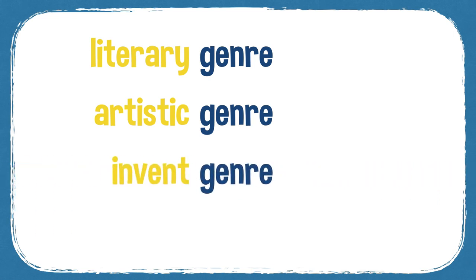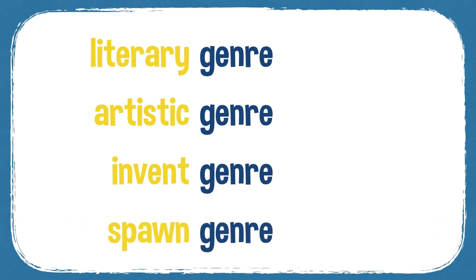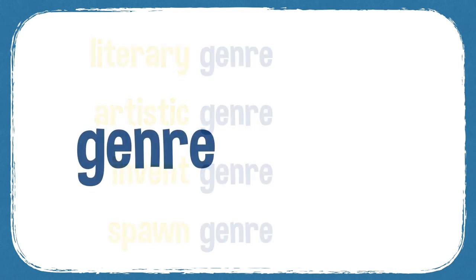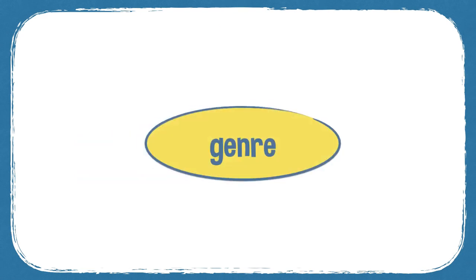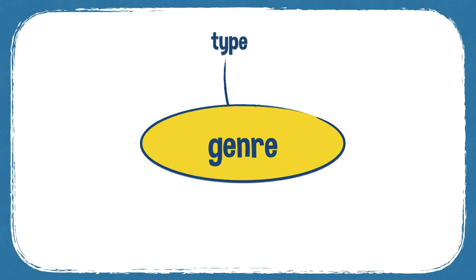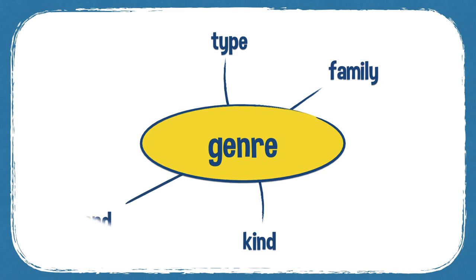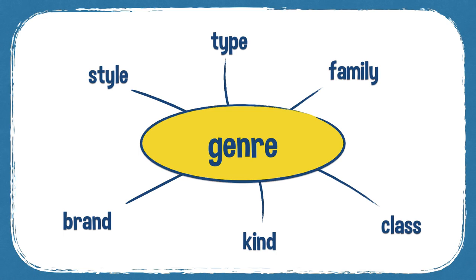Some verbs that go with genre are invent — meaning to create a genre — and spawn, meaning to make it more popular and spread it. Genre is a noun, so the only real form is genres for the plural. Some synonyms for genre: type, kind, family, brand, style, and class.